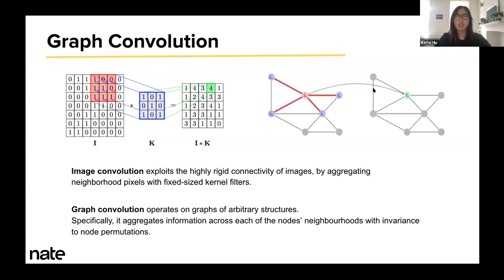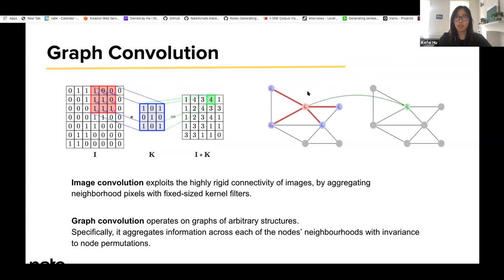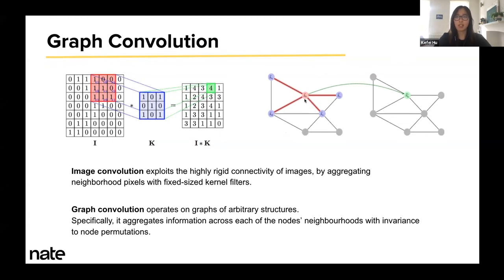Graph convolutions are similar, except they aggregate any number of node features. Specifically, given the target node, it aggregates the information from each of its neighboring nodes up to a certain search depth. Just like image kernels, it can be both non-parametric like mean pooling, or it can consist of some learnable weights.